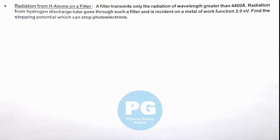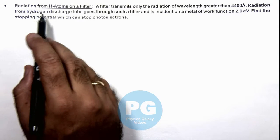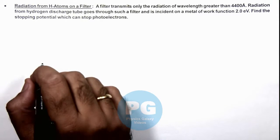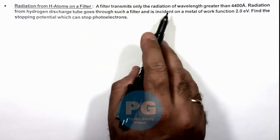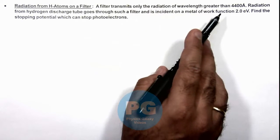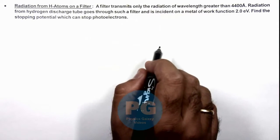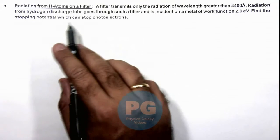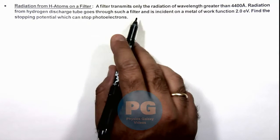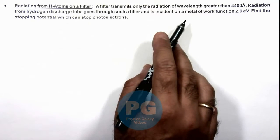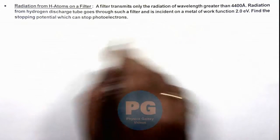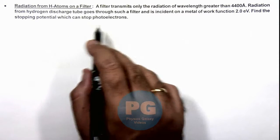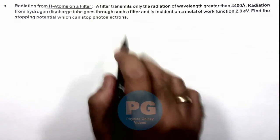In this illustration, we'll discuss radiation from hydrogen atoms falling on a filter. We are given that a filter transmits only the radiation of wavelength greater than 4400 angstrom. Radiation from a hydrogen discharge tube goes through such a filter and is incident on a metal of work function 2 electron volts. We are required to find the stopping potential which can stop the photoelectrons ejected in this manner.